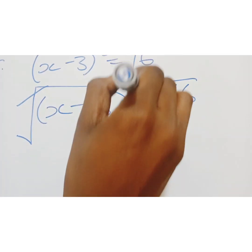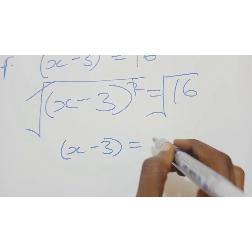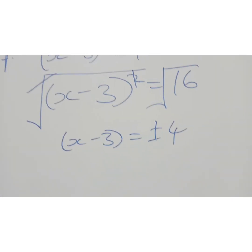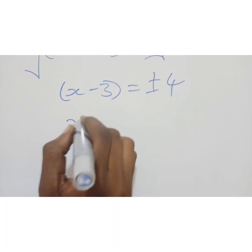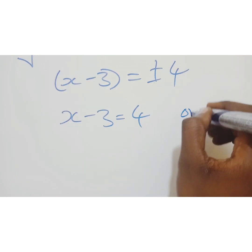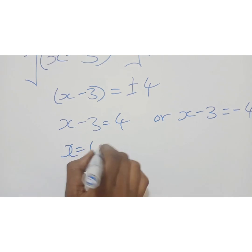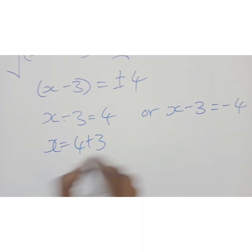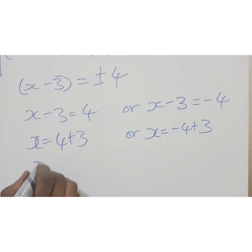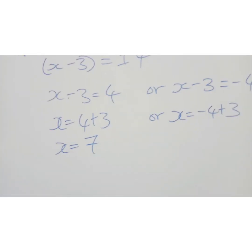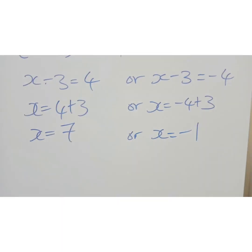So you have x minus 3 equals, square root of 16 is positive or negative 4. Because it's a root, so it's positive or negative. So we have x minus 3 equals positive 4, or x minus 3 equals negative 4. So x equals 4 is positive side plus 3, or x equals negative 4 is positive side plus 3. So x equals 7, and we have 4. x equals negative 1.